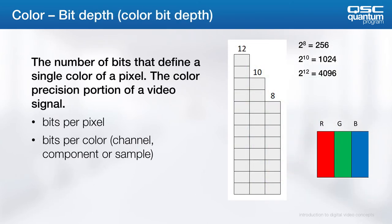The color bit depth is the number of bits that define a single color of a pixel. The color precision portion of the video can be defined as bits per pixel or per color. With 8, 10, or 12-bit color, it is defined as bits per color, not per pixel.